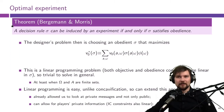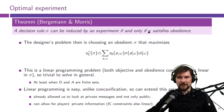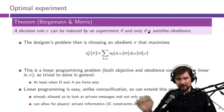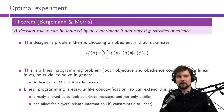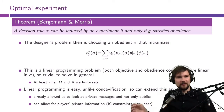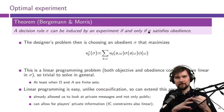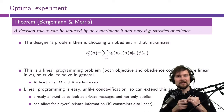This is the revelation principle theorem: a decision rule σ can be induced by some experiment if and only if σ satisfies obedience. It is trivial that any experiment generates some decision rule, but the converse — whether we can pick any decision rule and find an experiment that generates it — is non-trivial. This theorem tells us that this is possible.